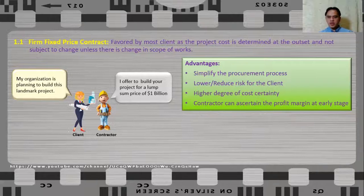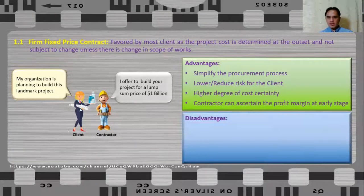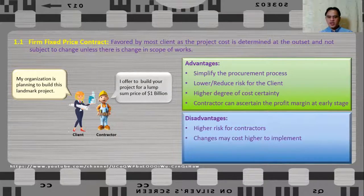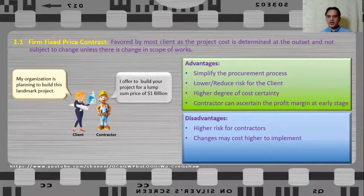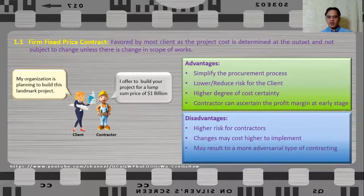Firm fixed price contract also has the following disadvantages. There is a higher risk for contractors and changes may cost more to implement, because in a firm fixed price contract there may be no price breakdown. So any variations that the client wishes to implement may be priced higher by the contractor, which may result in a more adversarial type of contracting and is prone to dispute.